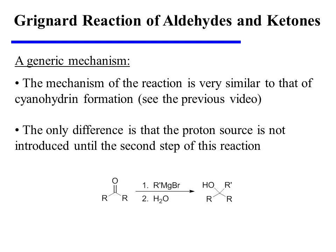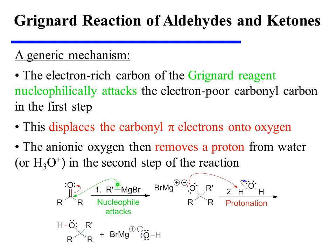The mechanism of this reaction is very similar to that of cyanohydrin formation. The only significant difference is that the proton source is not introduced until the second step. The electron-rich carbon of the Grignard reagent first nucleophilically attacks the electron-poor carbonyl carbon, displacing the carbonyl pi-bonding electrons onto oxygen. The anionic oxygen then removes a proton from water or dilute aqueous acid in the second step, yielding the product as an alcohol.